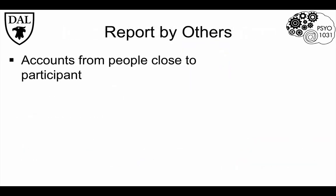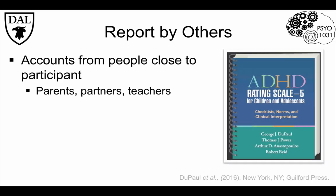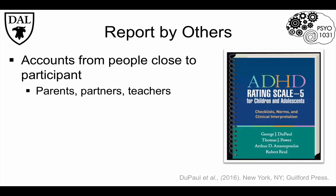Reports by others are often used to offset some of the limitations of self-report methods. These are accounts from people close to the participant of interest, such as parents, romantic partners, or teachers. The ADHD rating scale is an example of a tool that relies, in part, on reports by others, and although developed as a diagnostic tool, it's also used in research.